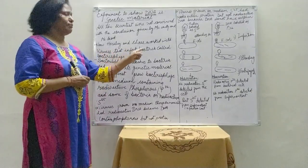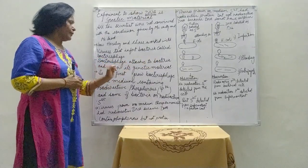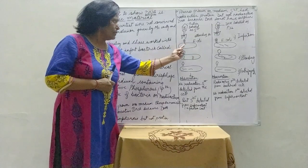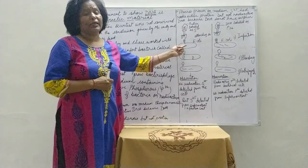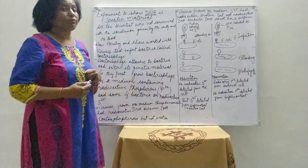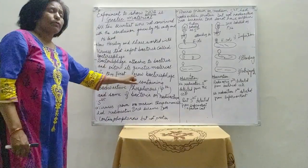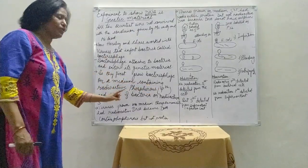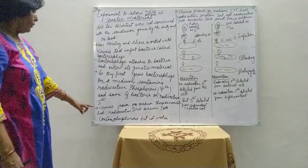Hershey and Chase worked on viruses that infect bacteria, called bacteriophages. Bacteriophages attach to the bacteria and enter their genetic material into it. This bacteriophage attaches to bacteria named E. coli and transfers their genetic material into the E. coli, incorporating into the bacterial cell and multiplying very fast. First, they grew bacteriophages on a medium containing radioactive phosphorus P32, and some were cultured on radioactive sulfur S35.